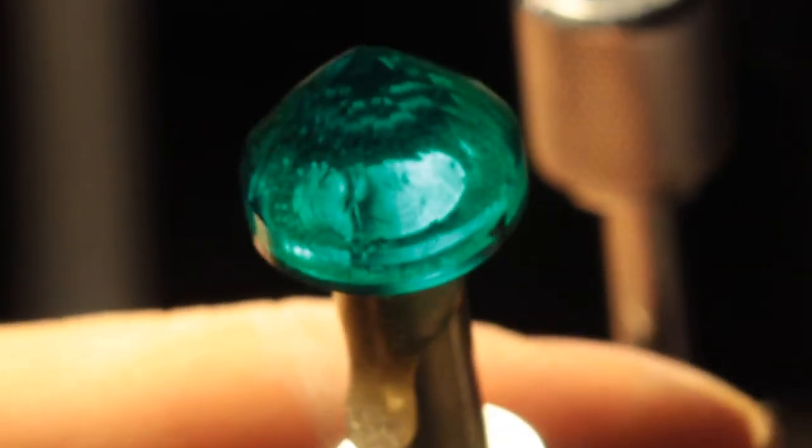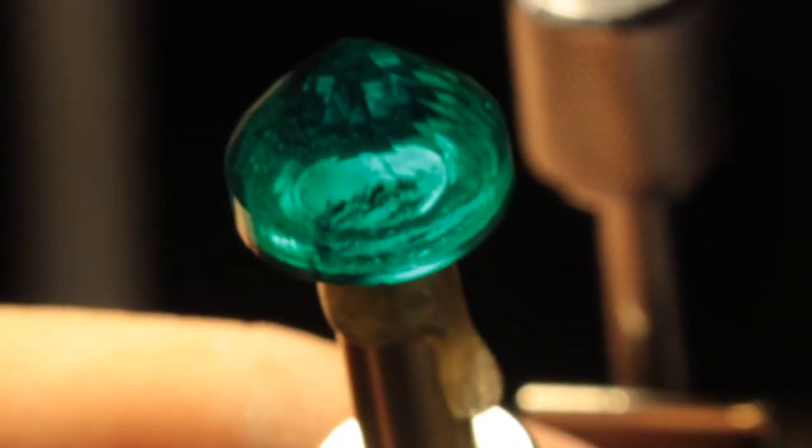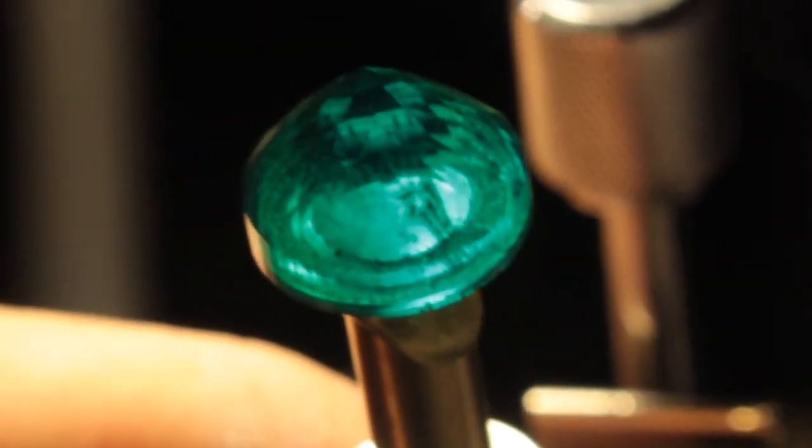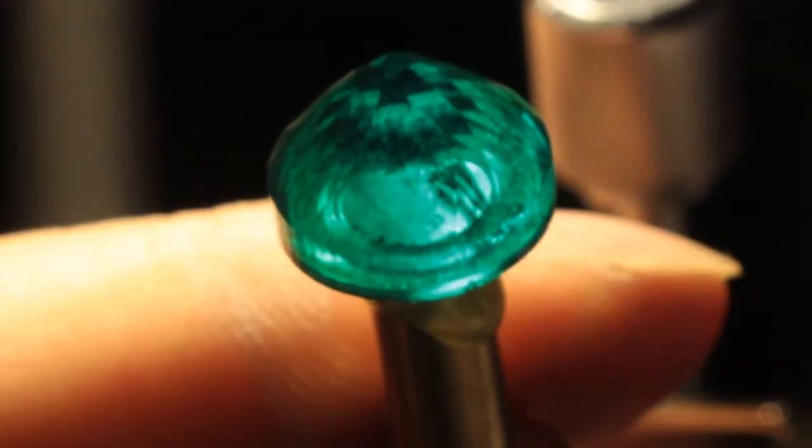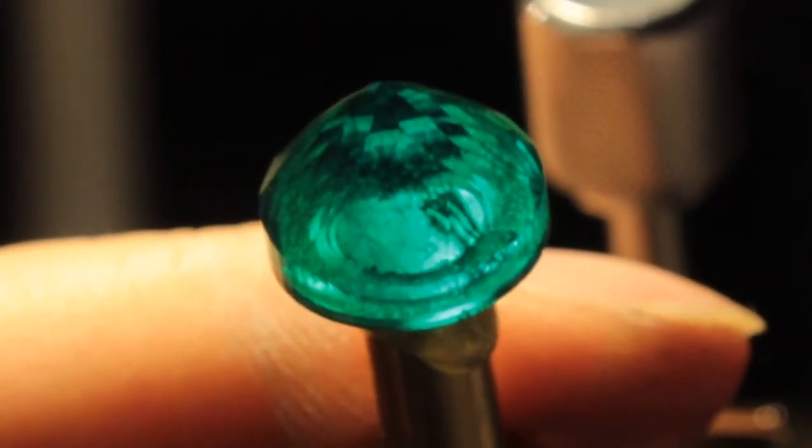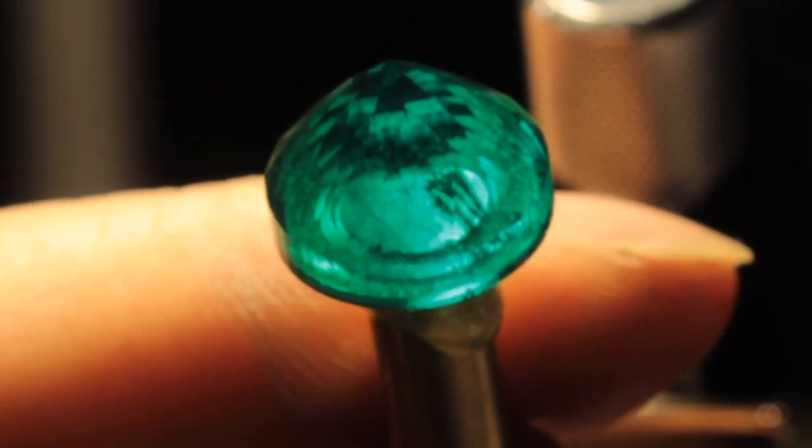There are some internal inclusions, not very many. It's a good looking emerald. So I'll transfer it with our transfer jig and get ready to cut the crown part of that.